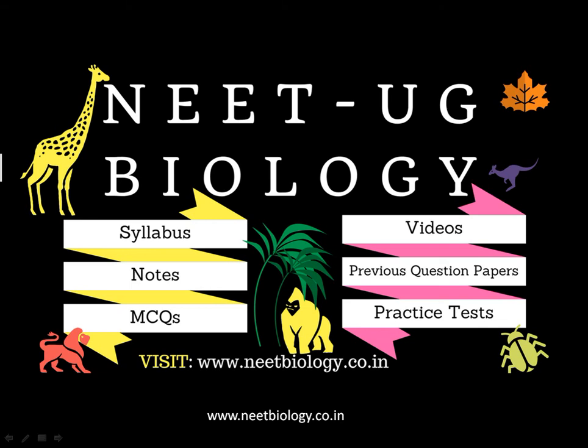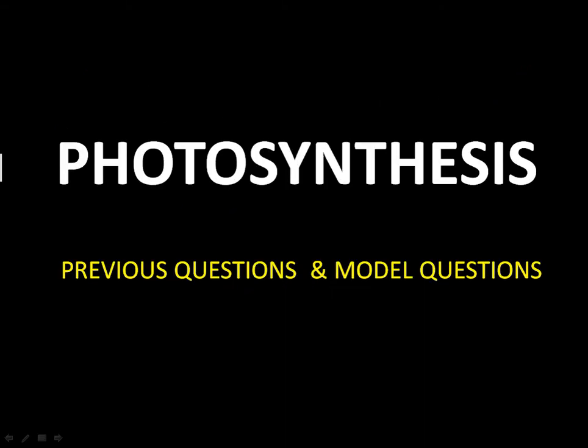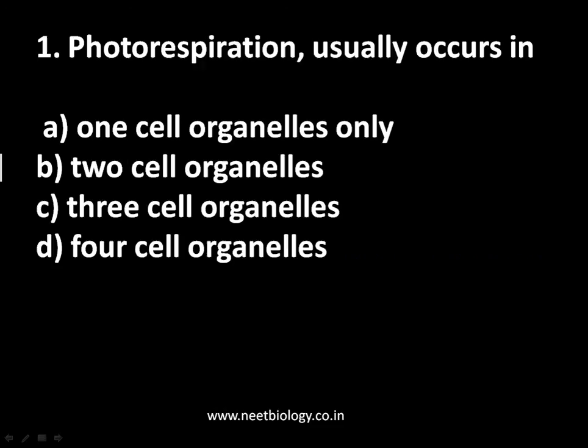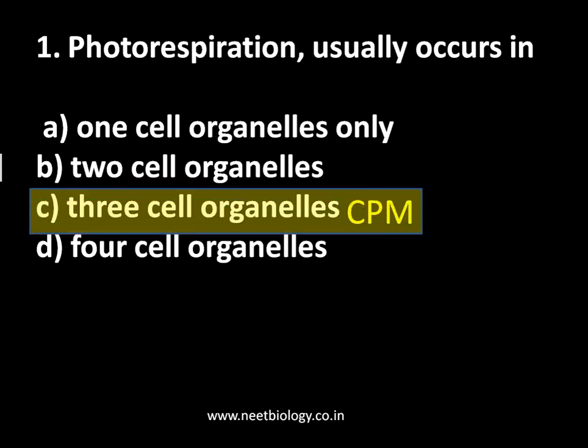Welcome to needbiology.co.in. Let's discuss some questions on photosynthesis — we have taken some previous questions and also included some model questions. Question number one: photorespiration usually occurs in — option A: one organelle, option B: two cell organelles, option C: three cell organelles, and option D: four cell organelles. The answer is three cell organelles.